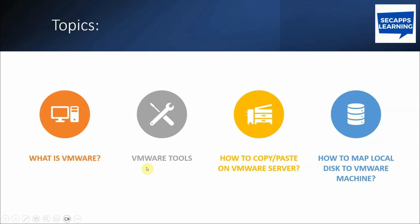VMware Tools are used for copy-paste. When you build a Windows server using a virtual machine, you need to install VMware Tools. In some versions of VMware, these tools get installed automatically and you don't need to install manually. But in some versions, like VMware 16 or 17, you need to install VMware Tools manually to be able to copy-paste from your local machine to the Windows server. There is another method you can use to map your local disk to the Windows server, which also allows easy copy-paste.